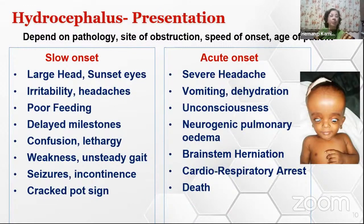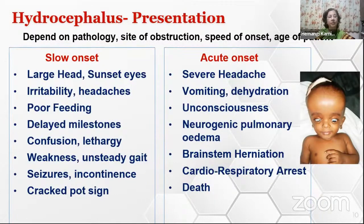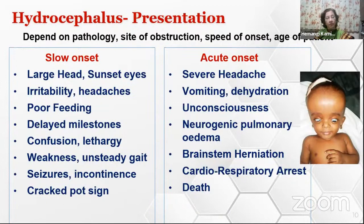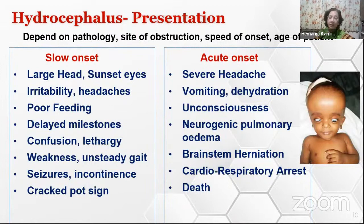The presentation depends upon the basic pathology, site of obstruction, speed of onset, and age of the patient. If hydrocephalus occurs very slowly and the child is an infant, there can be large head, sunset sign eyes, irritability, headaches, poor feeding, delayed milestones, confusion, lethargy, weakness, unsteady gait, and seizures. If it is acute onset, the presentation may be more severe with severe headache, vomiting, dehydration, unconsciousness, neurogenic pulmonary edema, brainstem herniation, and even cardiorespiratory arrest have been reported.